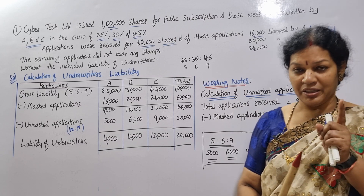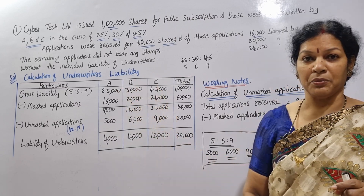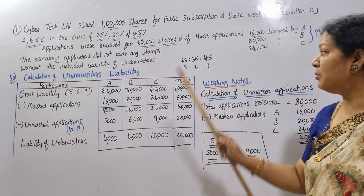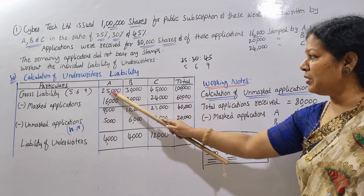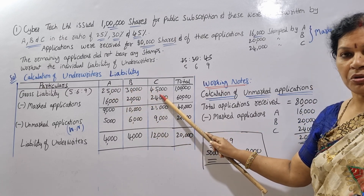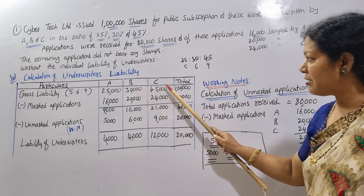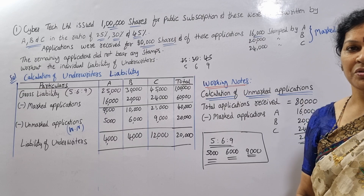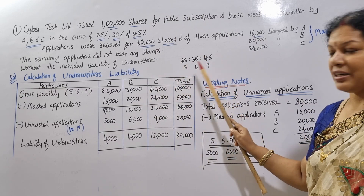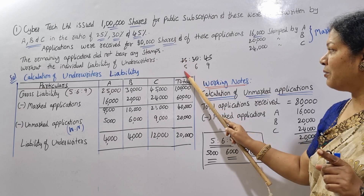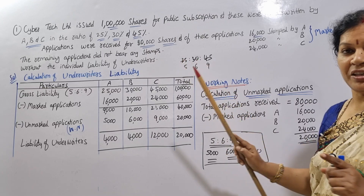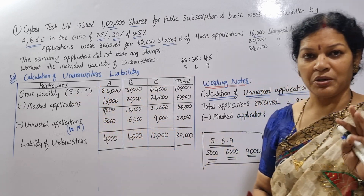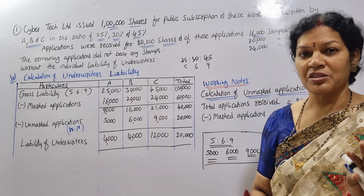The gross liability totals 1 lakh. We can simplify the ratio 25 : 30 : 45 by dividing by 5, giving us 5 : 6 : 9. This simplified ratio will be used for distributing unmarked applications.